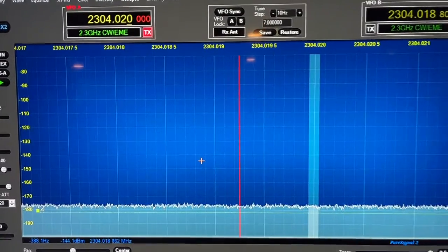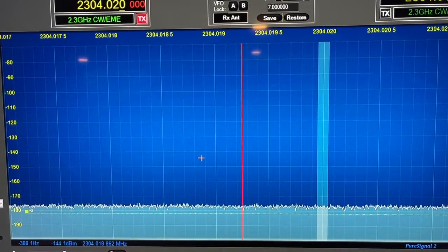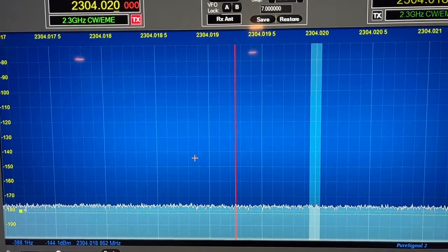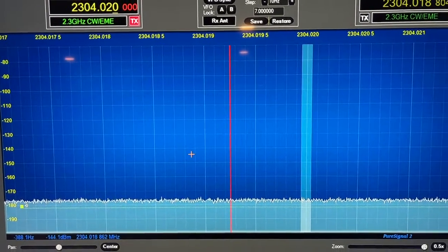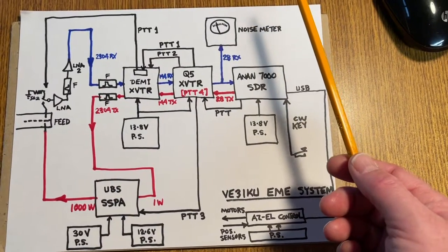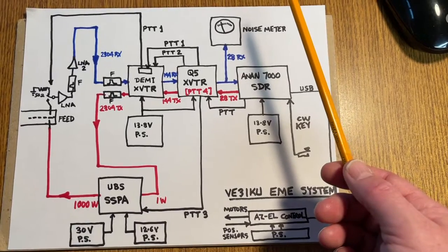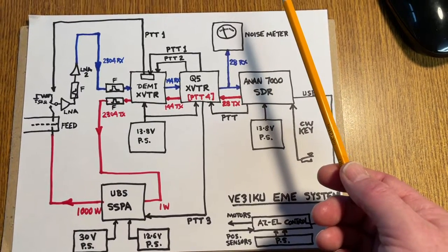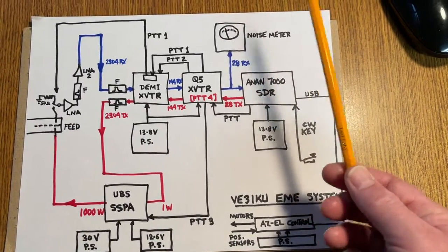That's currently the noise floor with the dish pointing straight up, minus 177 dBm per hertz. Fine-tuning sun noise and moon noise for optimizing the antenna pointing and the dish feed location and optimizing the system.